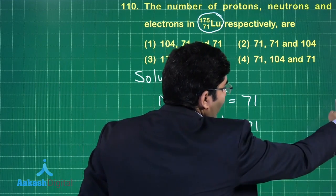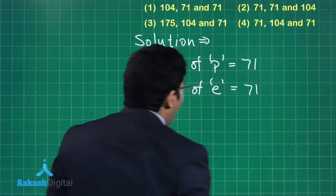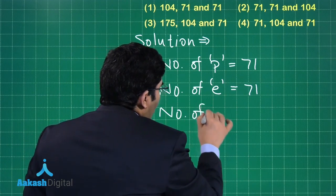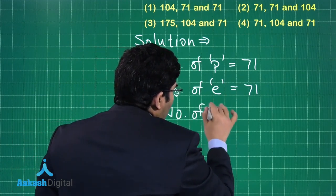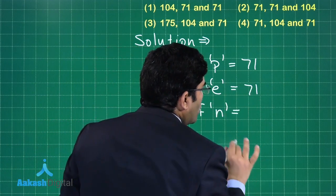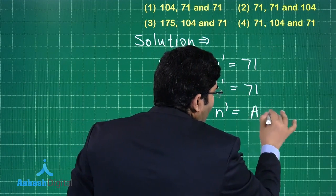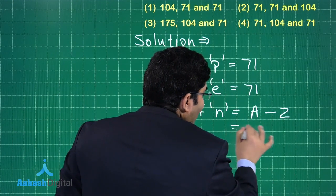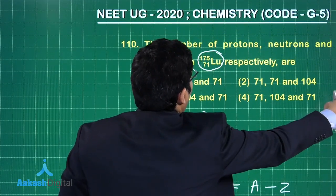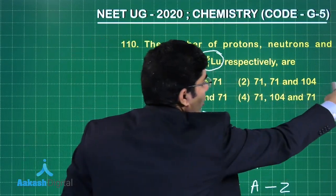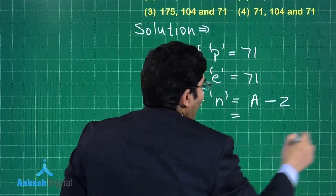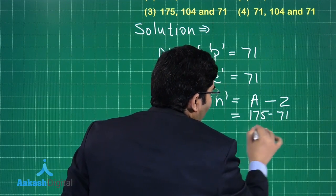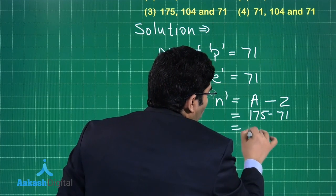The number of neutrons can be found by mass number minus atomic number. Mass number is 175 and atomic number is 71, so 175 minus 71 gives us 104 neutrons.